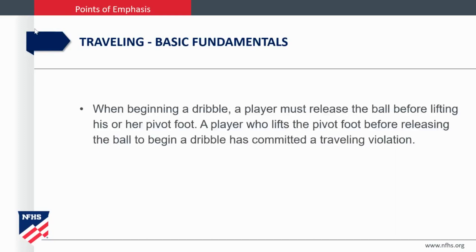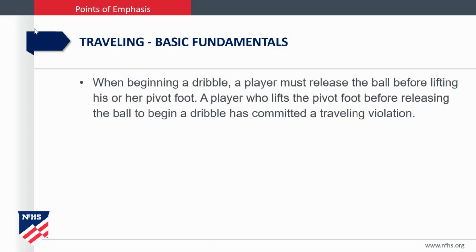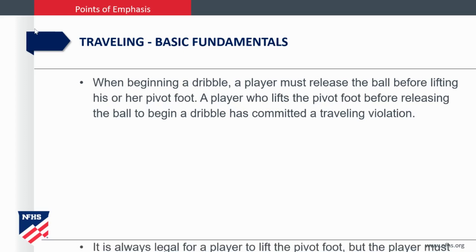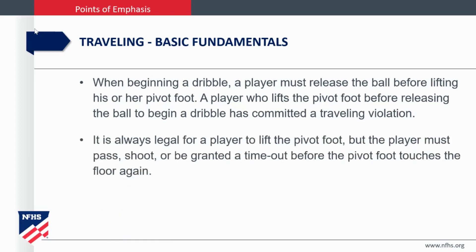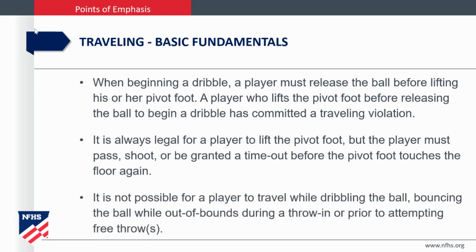A point of emphasis: traveling. Let's review some fundamentals. When starting a dribble, a player must release the ball before lifting the pivot foot. A player who lifts the pivot foot before releasing the ball to begin a dribble has committed a traveling violation. It's always legal for a player to lift the pivot foot, but the player must pass, take a shot, or be granted a timeout before the pivot foot touches the floor again.